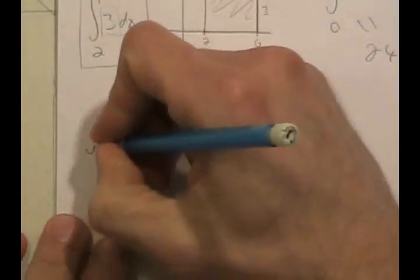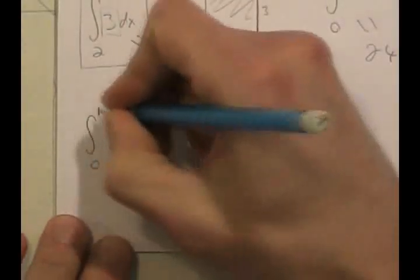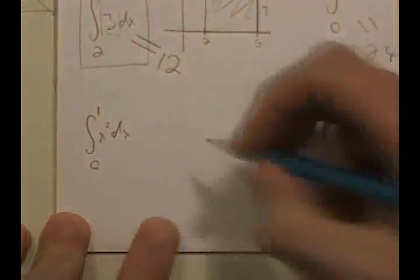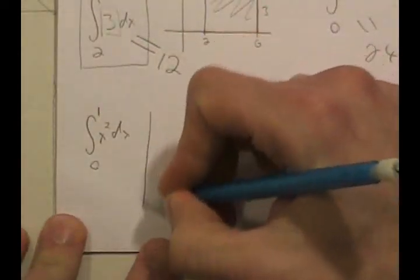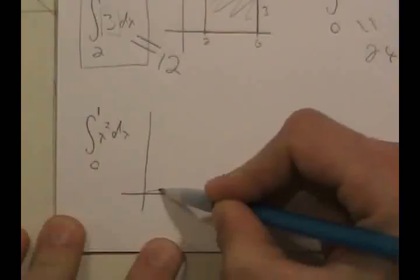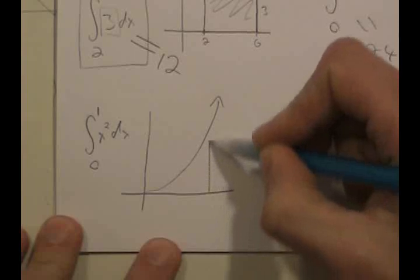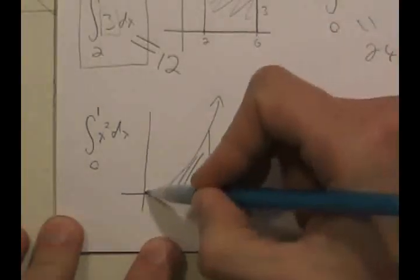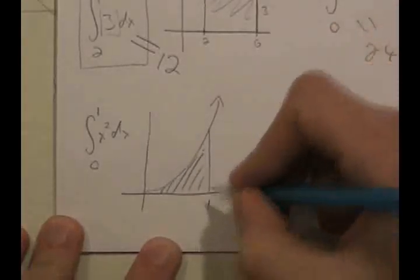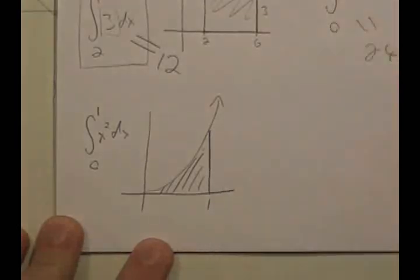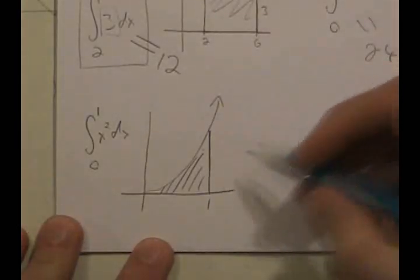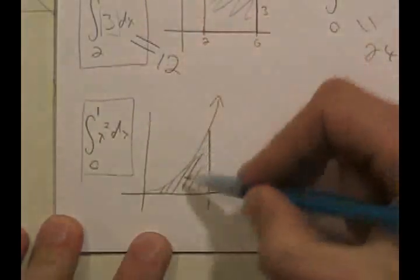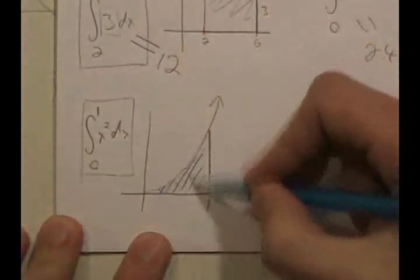But for anything more complicated than that — anything that has a bend to it — even for simple functions we totally understand, like the integral from 0 to 1 of X squared DX, we know what area that's in reference to, but we don't have any way of computing it because it's not made of straight line segments or parts of circles. So we just have to content ourselves for the time being with just having a symbol for the area under the curve that we might want to actually find.